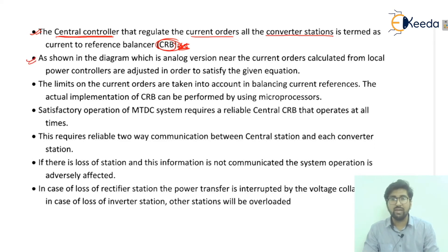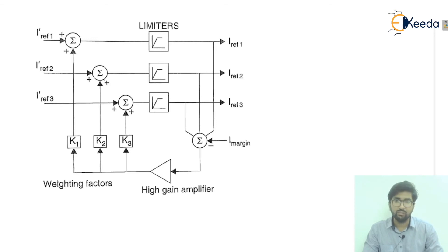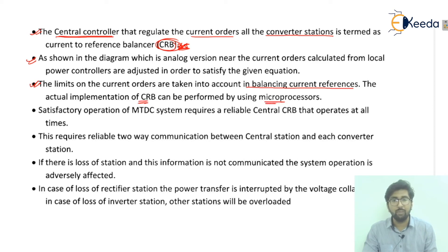The CRB is shown in an analog diagram with limiters, reference currents (I_ref 1, 2, 3), summing points, gains k1, k2, and k3, a high-gain amplifier, weighting factors, and I_margin. The limits on current orders are taken into account in the balancing current reference. The actual implementation of the CRB is performed using a microprocessor.